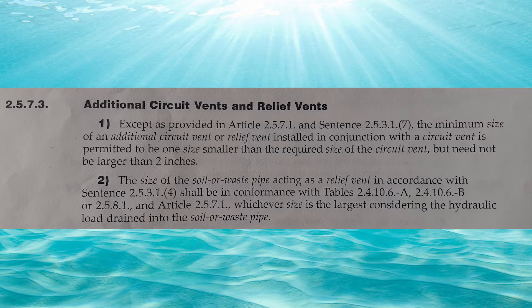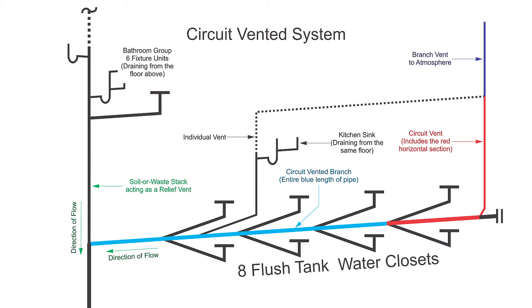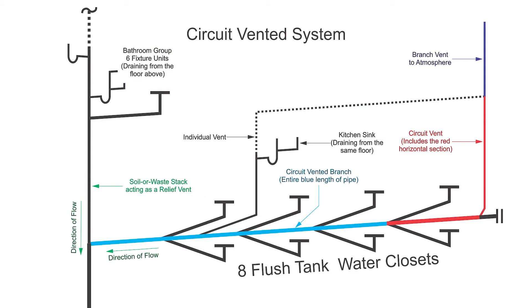Let's jump into Part 2. Code 2573 Part 2: the size of a soil/waste pipe acting as a relief vent in accordance with sentence 2531 Part 4 shall be in conformance with table 24106A, 24106B, or 2581, and article 2571 — whichever size is the largest, considering the hydraulic load drained into the soil/waste pipe. In that jumbled mess, what they're trying to tell us is how to size a relief vent that also has fixtures draining through it. We're going to ignore most of those tables and go straight to the one that matters: 2581, the wet vent table.